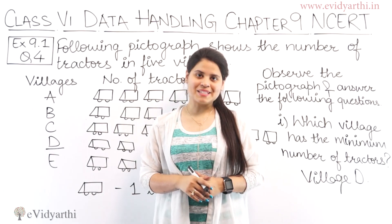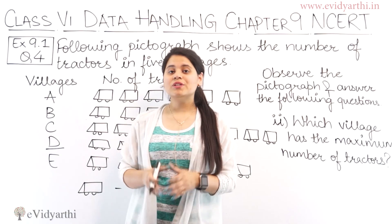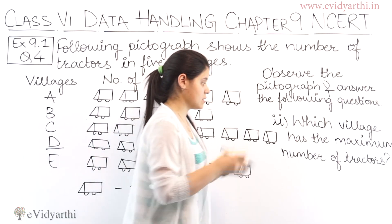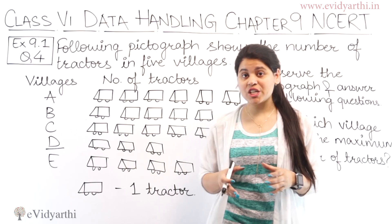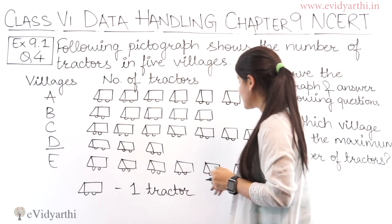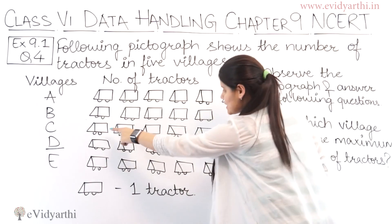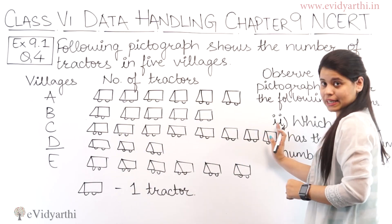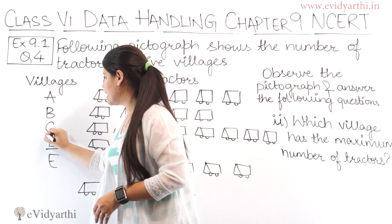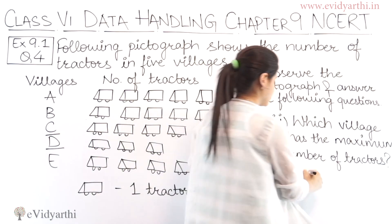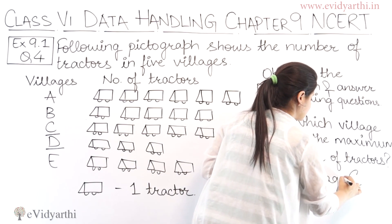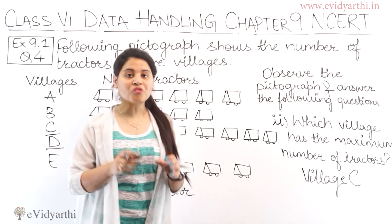Now coming to the second part: which village has the maximum number of tractors? If you look at the most pictures — the longest row of tractor symbols — that is village C. So the answer is village C; village C has the maximum number of tractors.